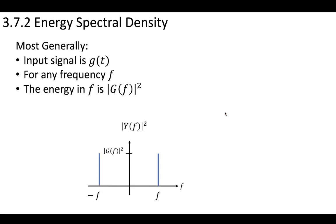Even more generally, if you have an input signal g(t), for any frequency f that is passed through, the energy in f is the square of its frequency domain signal. That is the energy contained in this band.